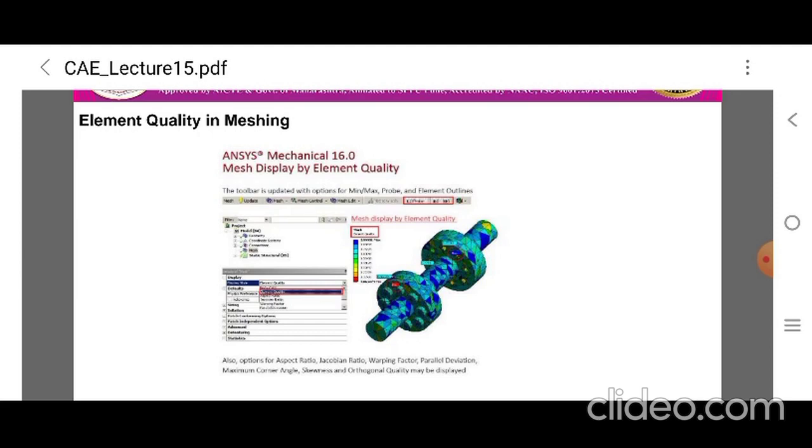Nowadays, most of the FE simulation softwares are equipped with inbuilt quality check options and quality-based mesh generation algorithms. Maintaining element quality is always a challenge for analysts during mesh convergence studies. Through element size is minimized, which means it is of no use if they are violating the quality requirements.